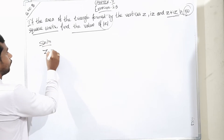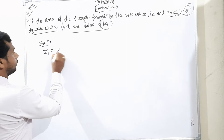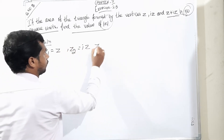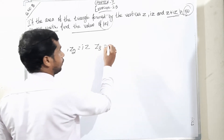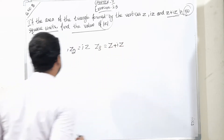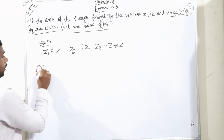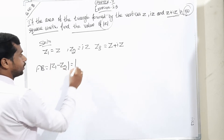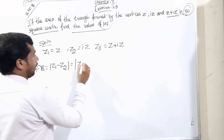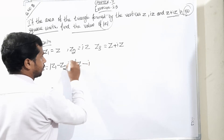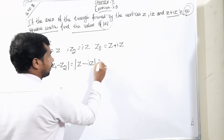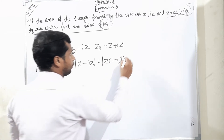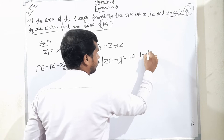For the solution, we consider Z1 is equal to Z, Z2 is equal to iZ, and Z3 is equal to Z plus iZ. So AB is equal to modulus of Z1 minus Z2, which is modulus of Z minus iZ. Taking Z common outside gives modulus of Z into modulus of 1 minus i.